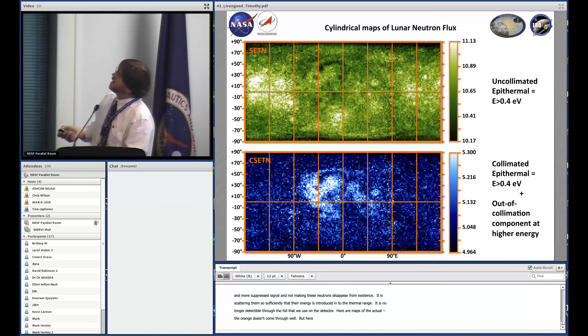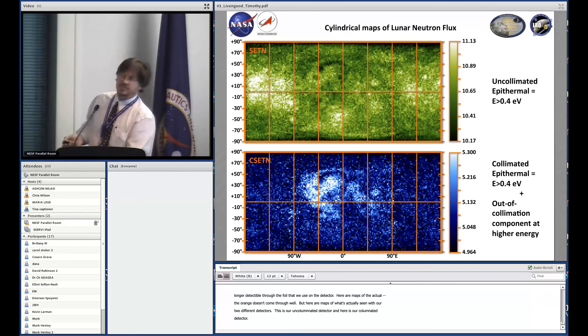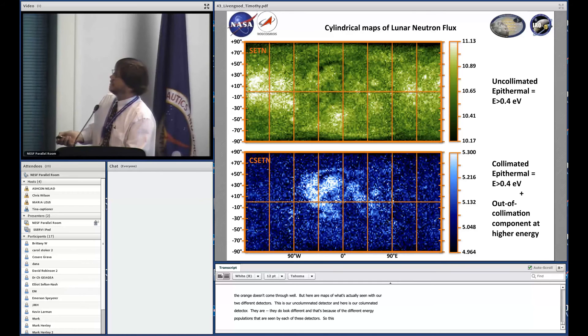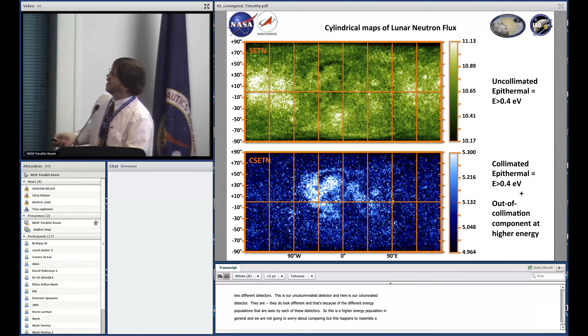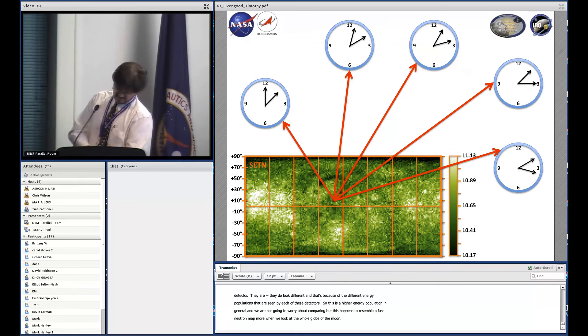Here are maps of what's actually seen with our two different detectors. This is our uncollimated detector, or SETN as we call it, and here is our collimated detector, or CSETN. They do look different because of the different energy populations seen by each detector. This is a higher energy population in general. This happens to resemble a fast neutron map more when we look at the whole globe of the moon.